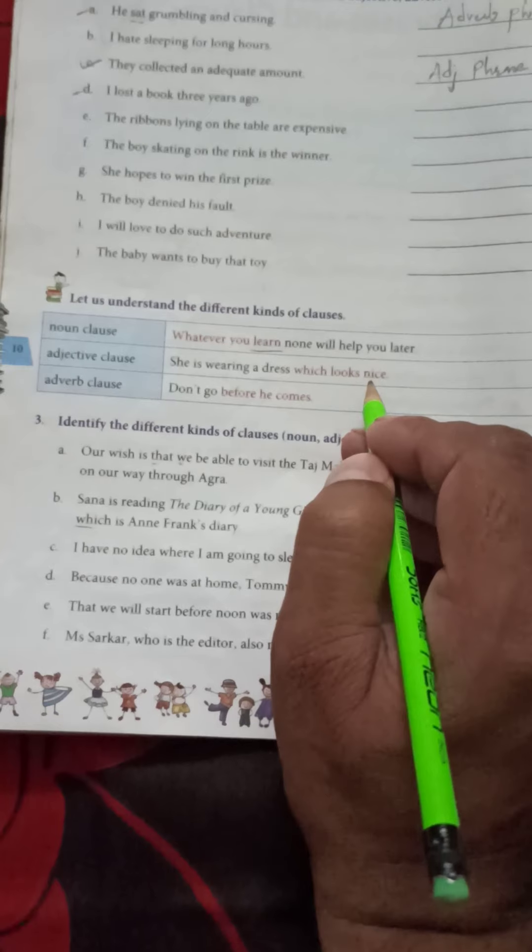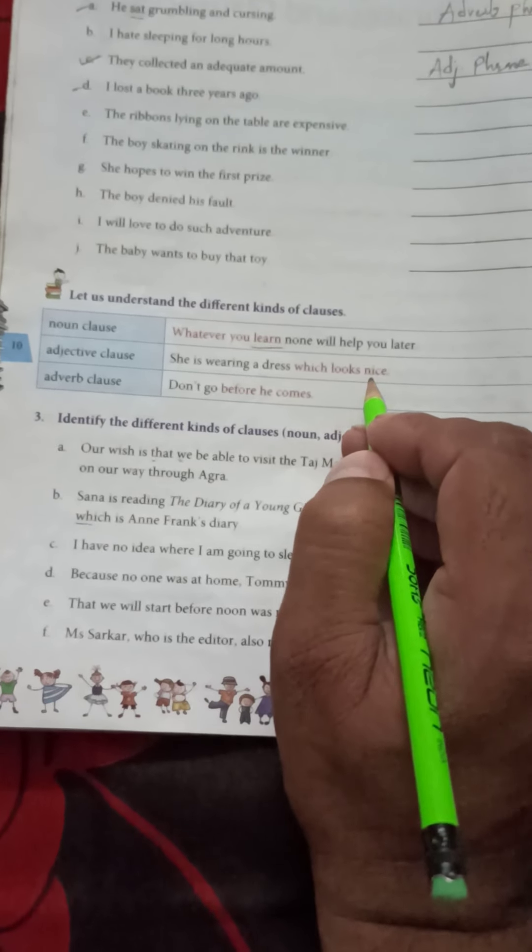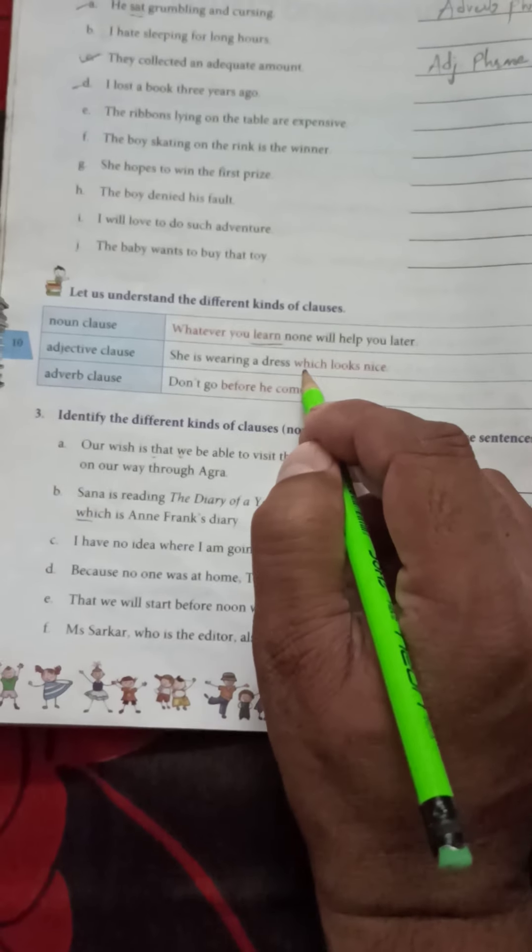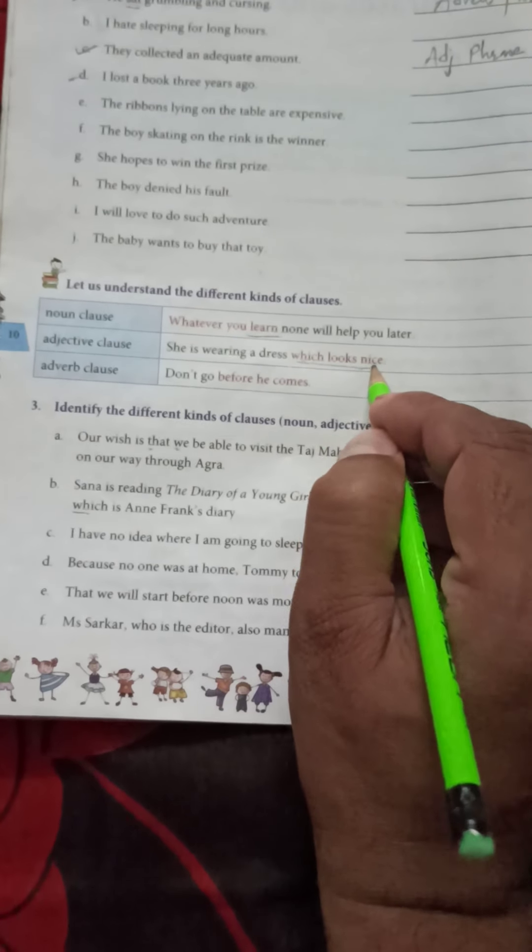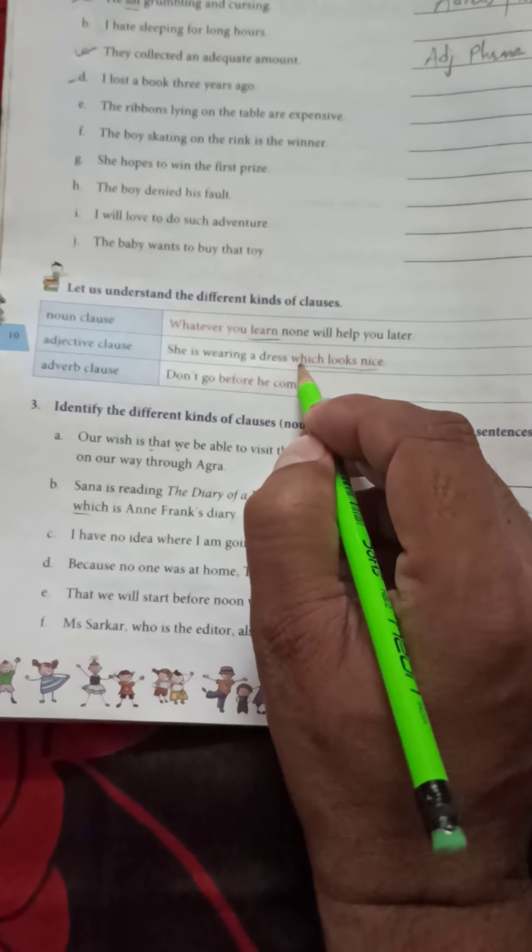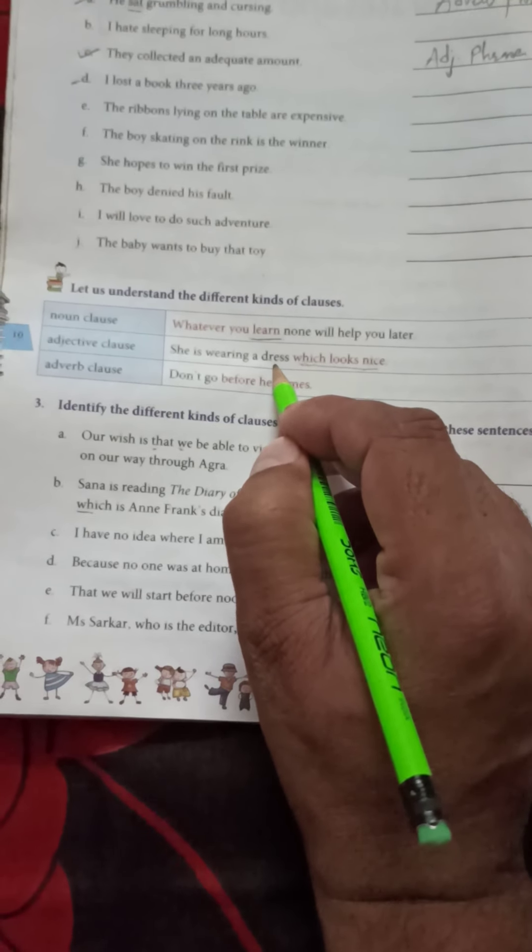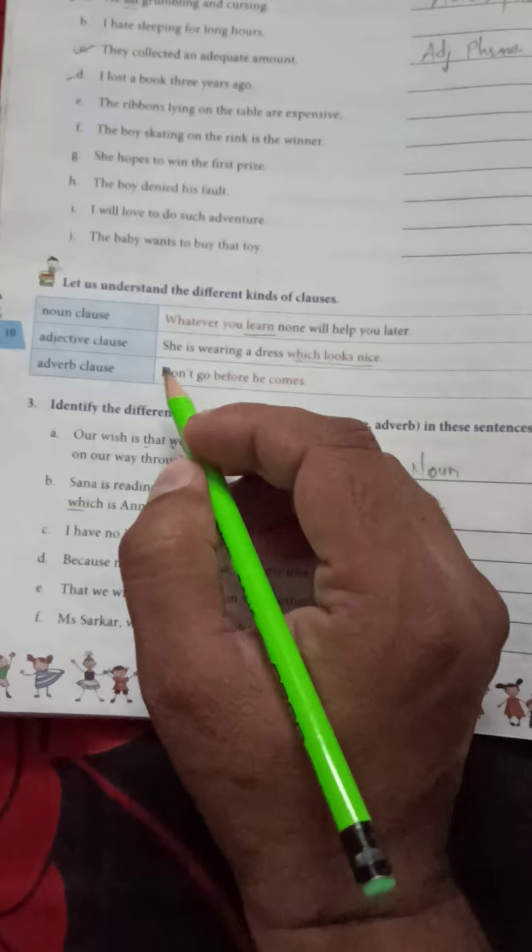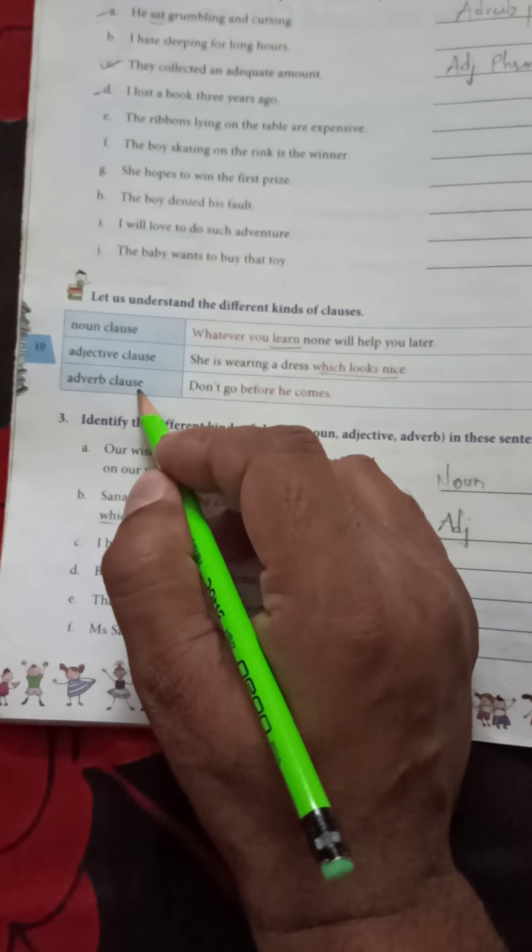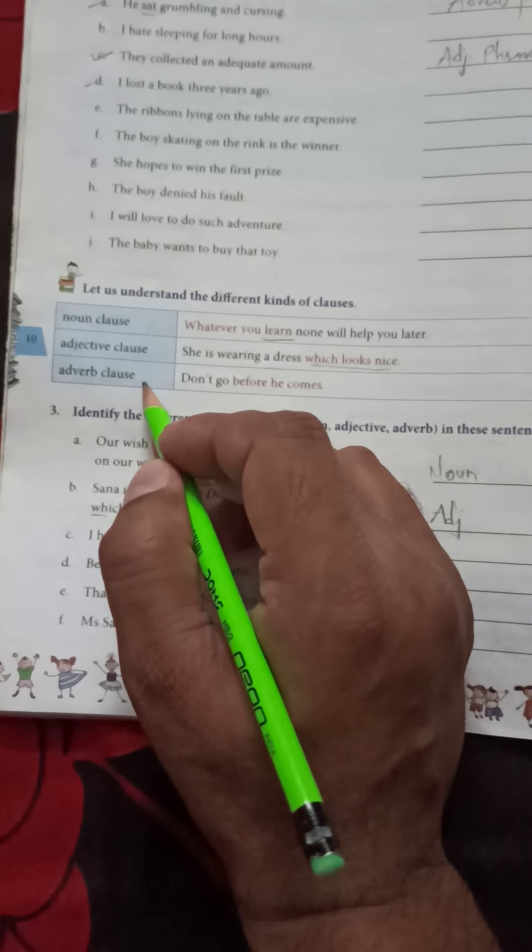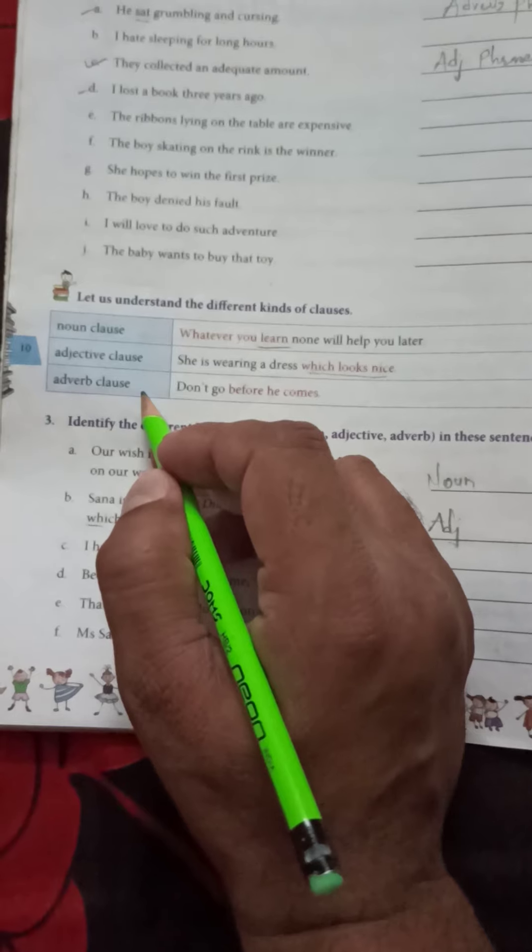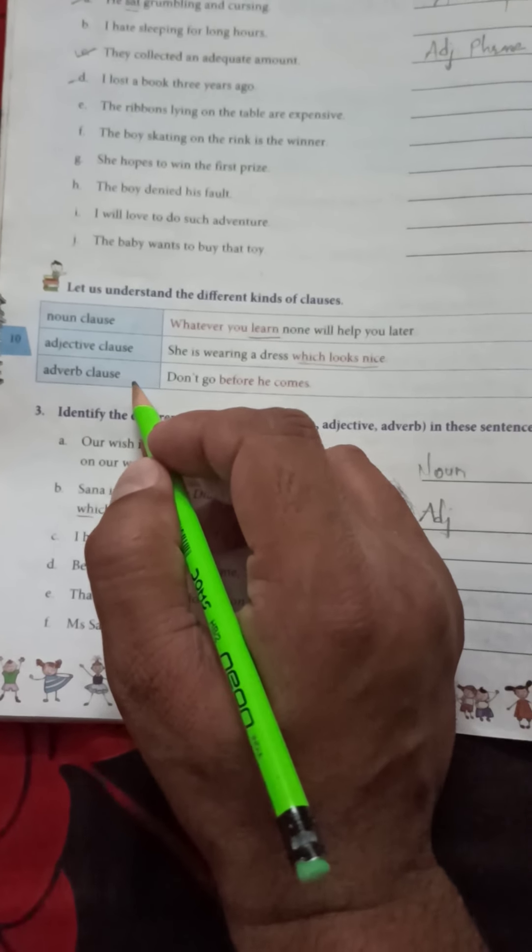Which looks nice. Here 'which looks nice' adjective clause is adjective clause which qualifies the noun dress. Okay, now adverb clause. Adverb clause means the group of words which modifies the meaning of main verb is called adverb clause. Example: don't go before he comes.